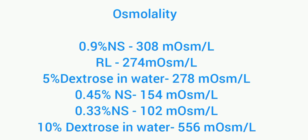Here we can see osmolality of different IV fluids. 0.9% NS: 308 milliosmol per liter. Ringer's lactate: 274. 5% dextrose in water: 278. 0.45% NS: 154. 0.33% NS: 102. And 10% dextrose in water: 556 milliosmol per liter. This is the osmolality of some different IV fluids — an important point.